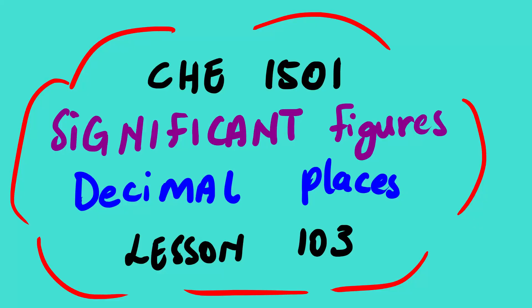Our lesson for today is Chemistry 1501. We are still busy with Study Unit 1 of your study guide. The topic for today is significant figures and decimal places — Lesson 103 of Study Unit 1.